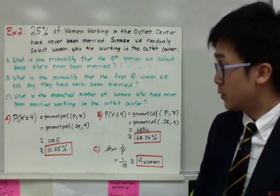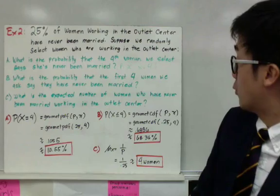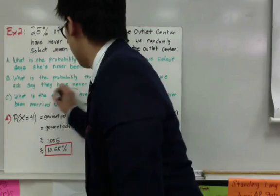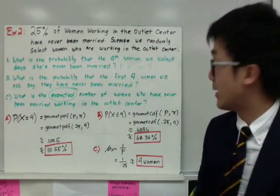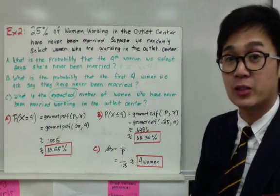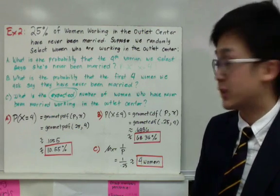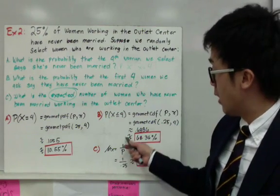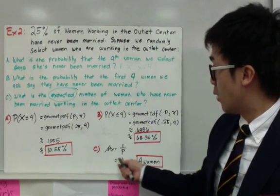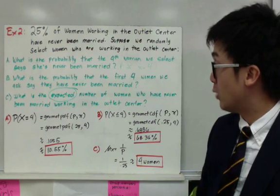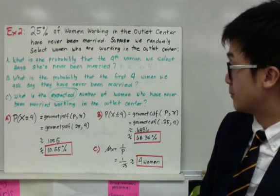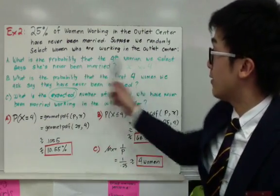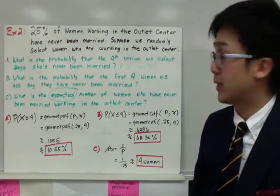For the last sub-question C, what is the expected number of women who have never been married working in the outlet center? The keyword here is 'expected,' meaning we find the mean of the geometric distribution. The formula is mu of X equals 1 over p. Plugging in: 1 over 0.25 equals 4. So we expect 4 women to say they have never been married.